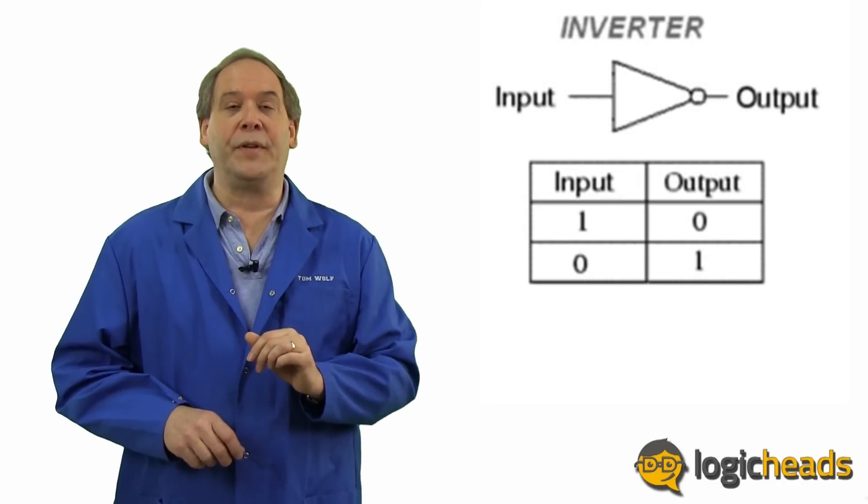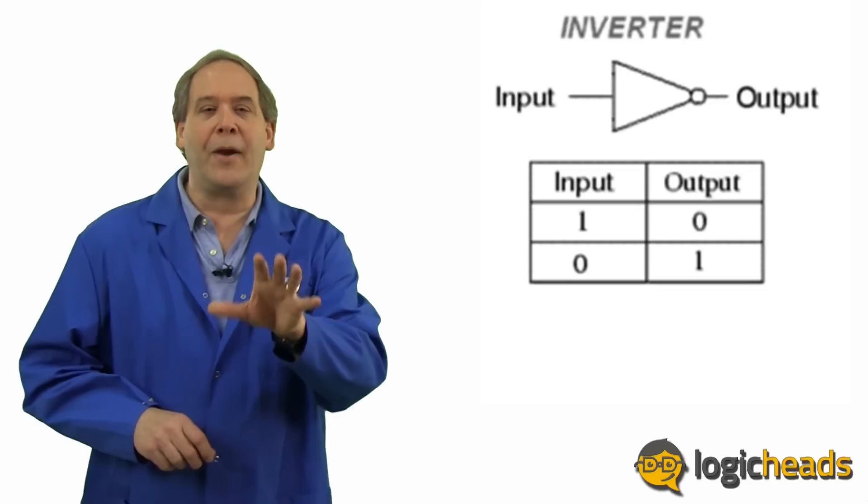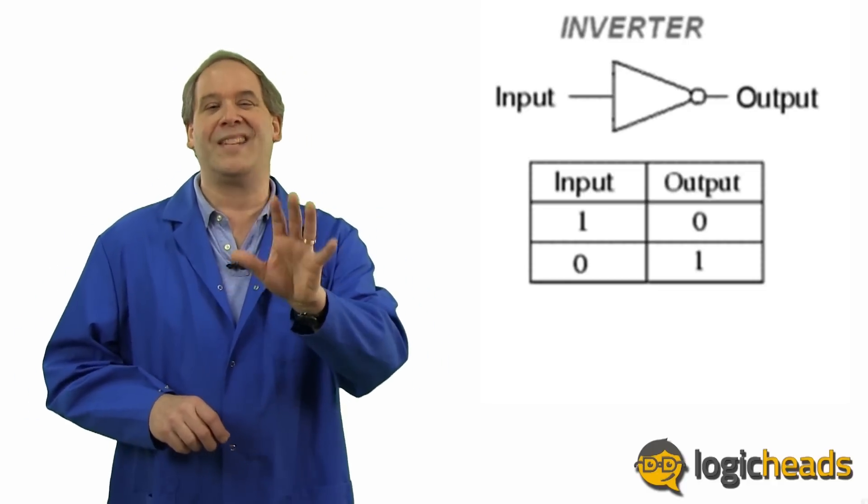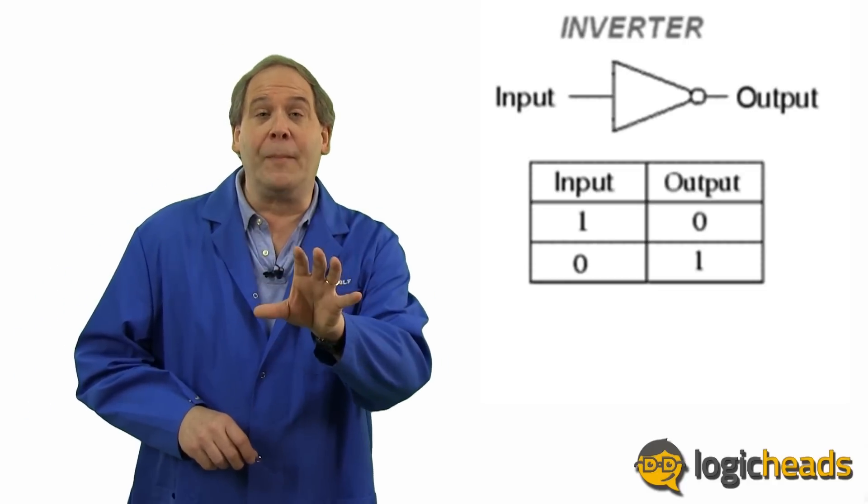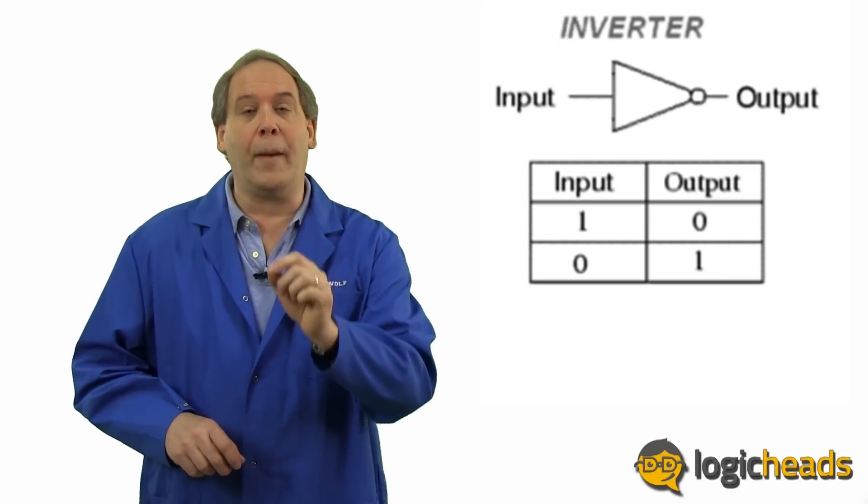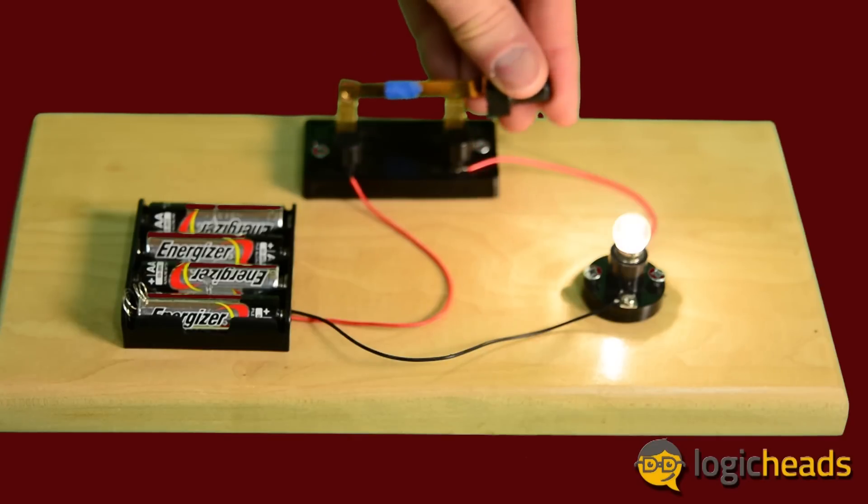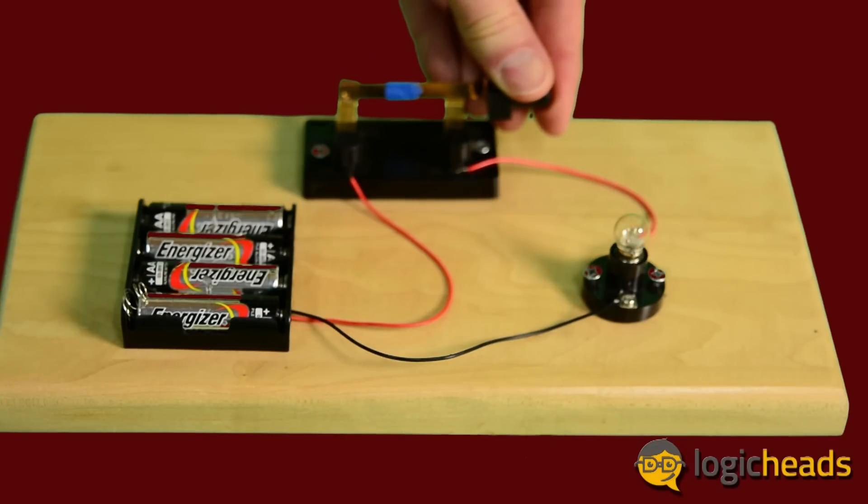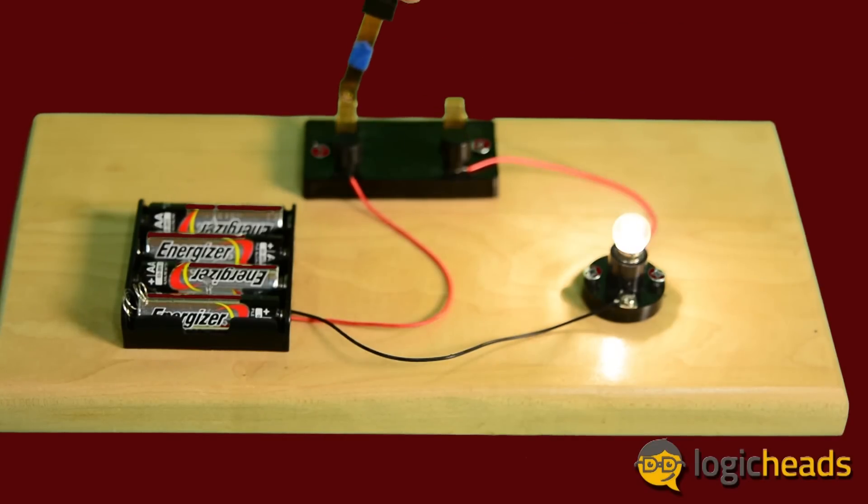Now here's one you may not have built in elementary school, because the exotic metal Inverdium is used in this switch, and it's not very easy to come by. But it implements a logical inverter. Apply a binary 1 by closing the switch and the lamp is off, so the output is an inverted 0. Apply a binary 0 by opening the switch and the lamp is on, so the output is an inverted 1.